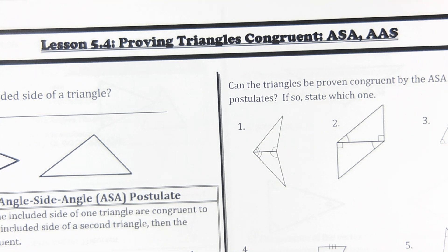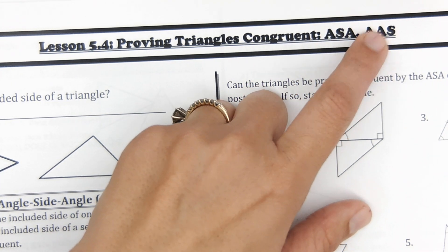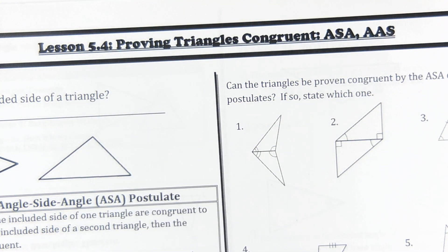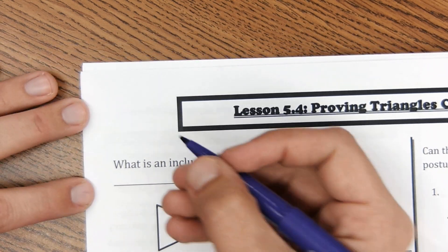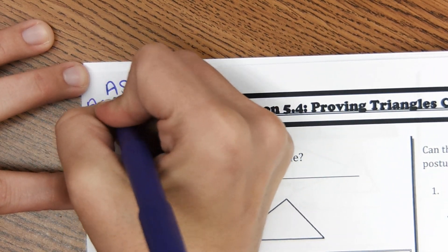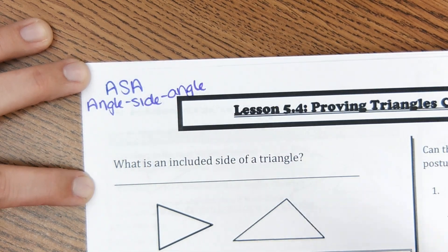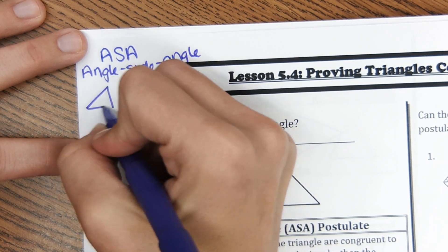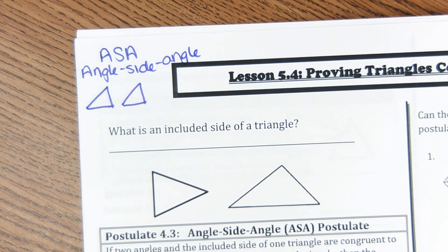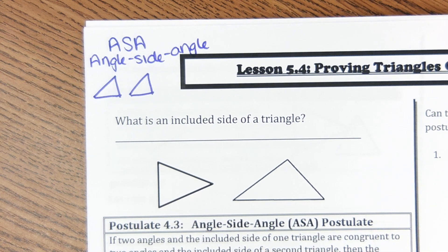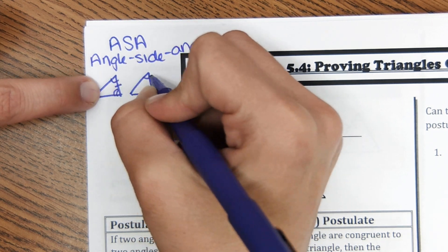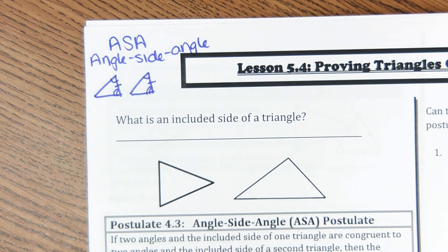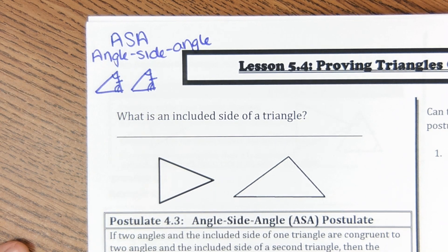This should start feeling a little bit easier now. We have two more congruent statements: ASA and AAS, standing for angle-side-angle and angle-angle-side. For ASA, the side has to be the included side — right between the two angles. It goes in that order: angle, side, angle. If you have that on both triangles, then those triangles are congruent.